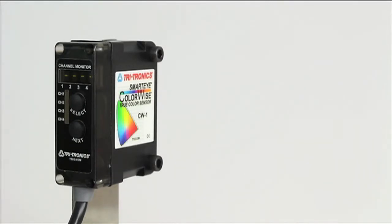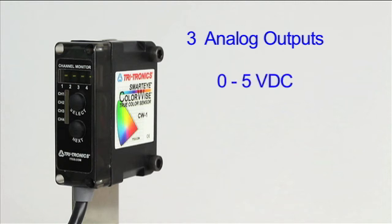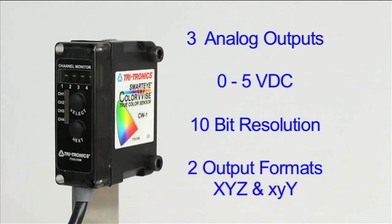The Tritronics ColorWise sensor is unique in offering the user three analog outputs that expand its usefulness in solving applications. All three analog outputs are 0 to 5 volts DC and have 10-bit resolution. They can be used to output analog color information in one of two formats.